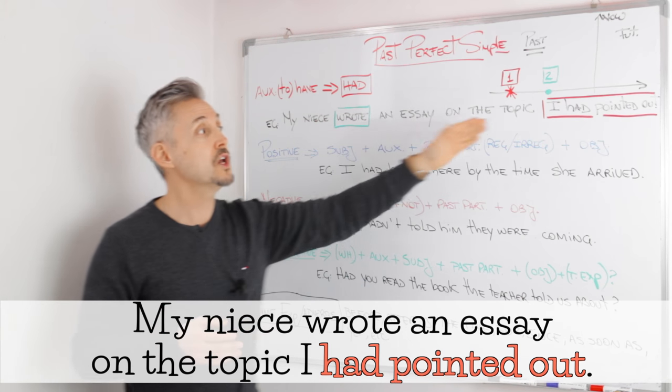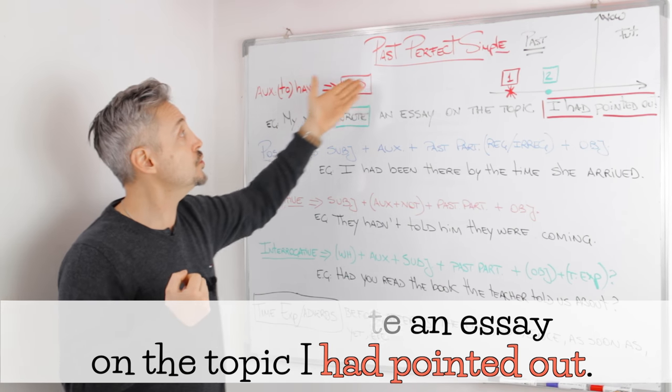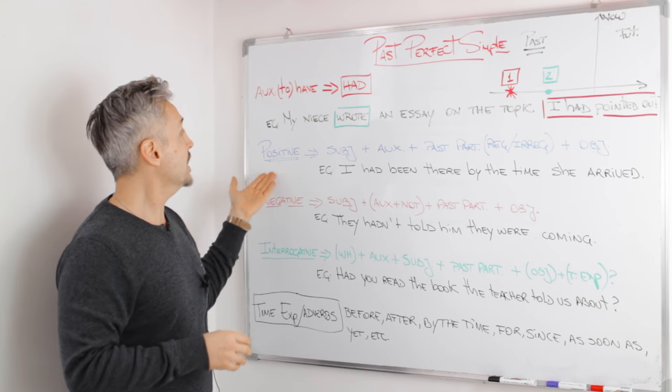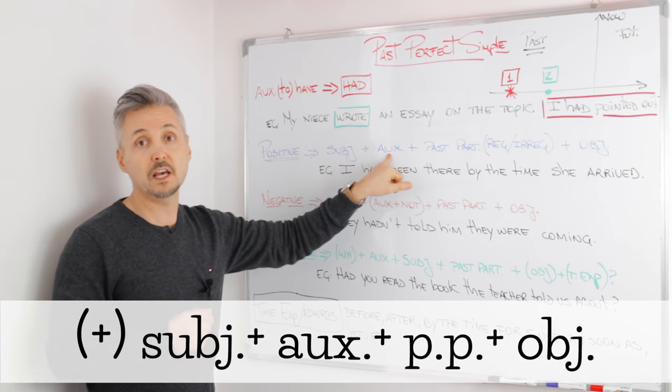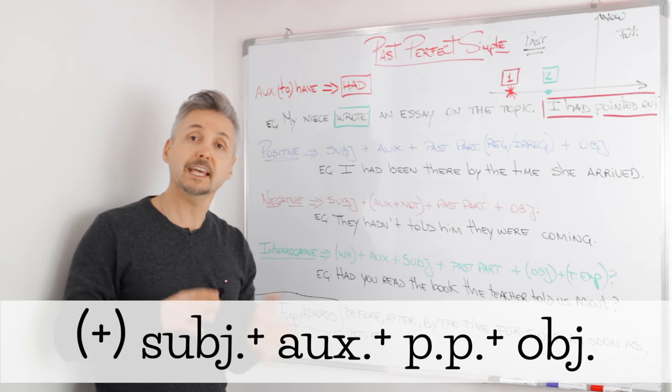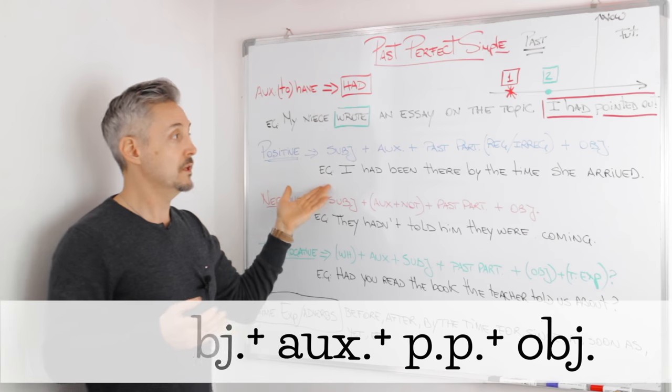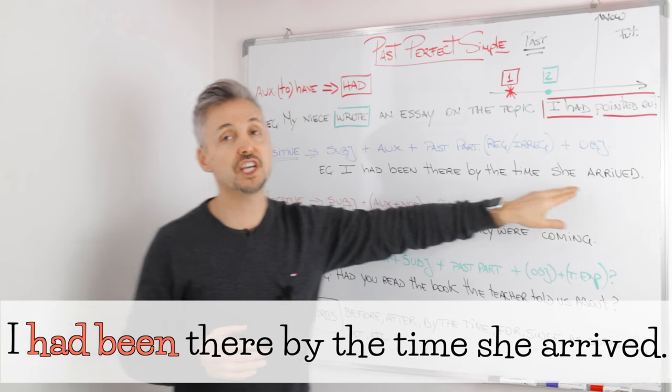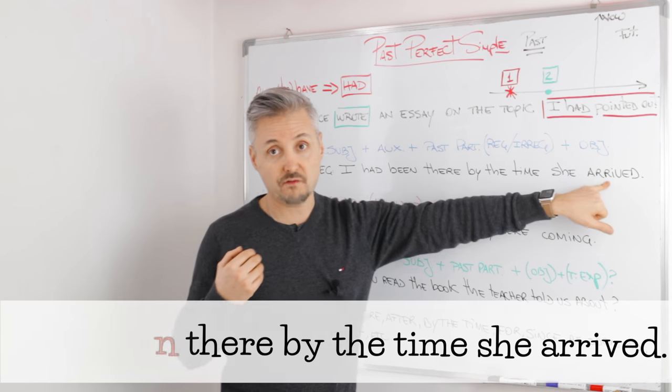So as you can see, we use had or the verb to have in the past as an auxiliary for the past perfect simple. And for a positive sentence, we need the subject, obviously. Then we need the auxiliary, had. Then we need the past participle, it can be regular or irregular, and then the object. So the example, I had been there by the time she arrived. I had been there, this is before she arrived.